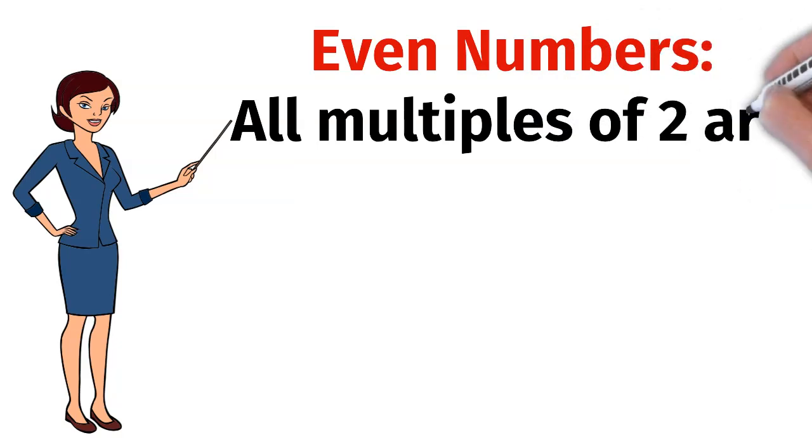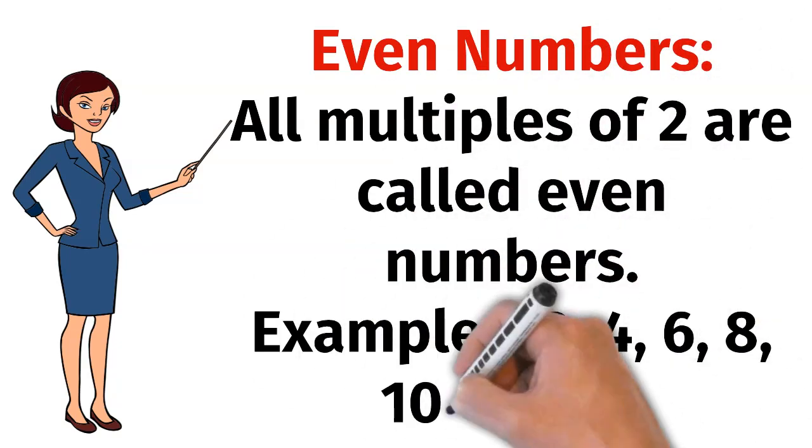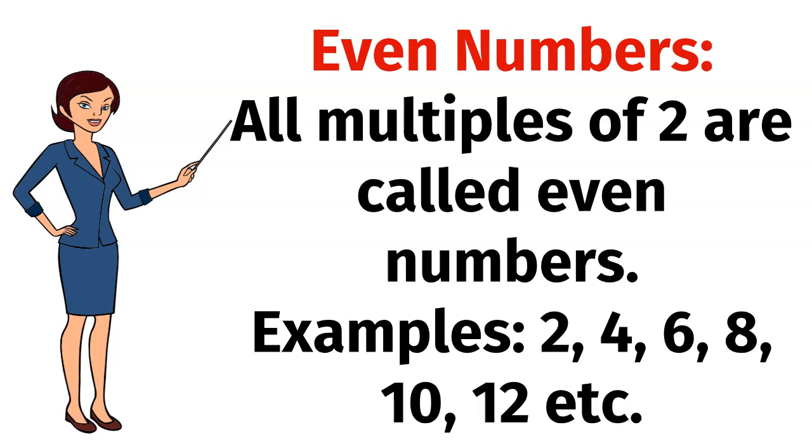What are even numbers? All multiples of 2 are called even numbers. For example, 2, 4, 6, 8, 10, 12, etc.